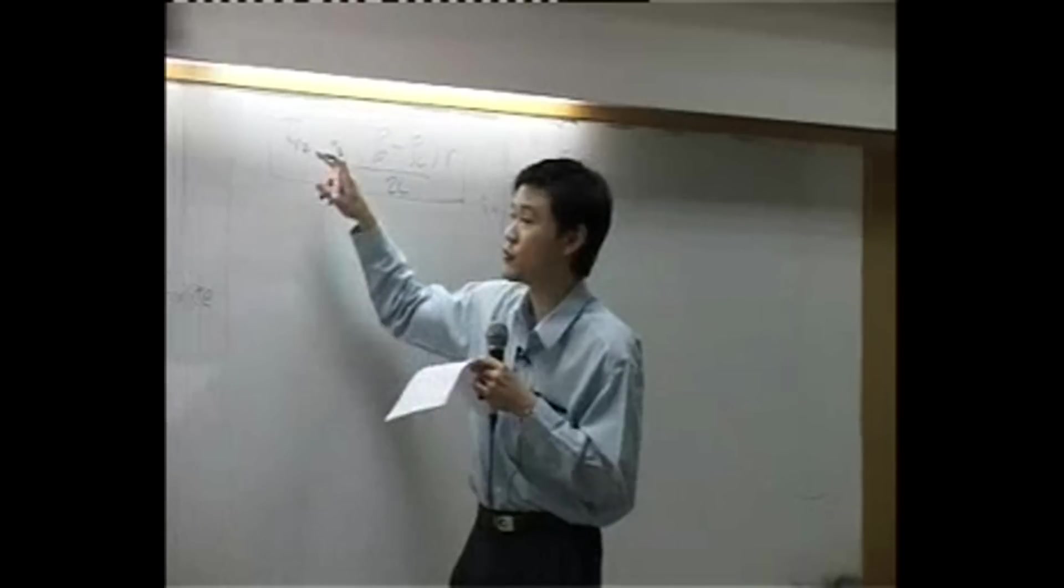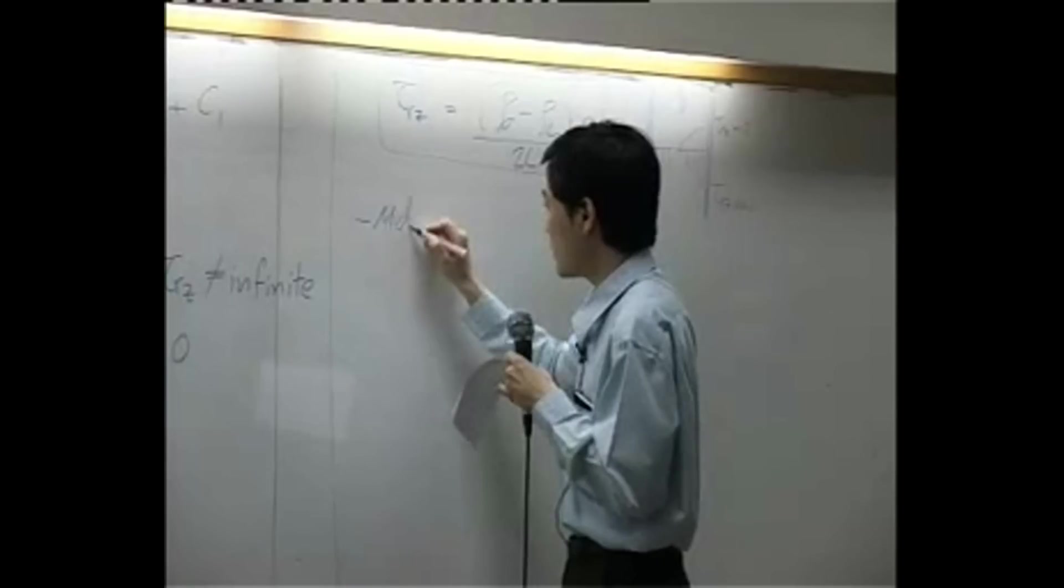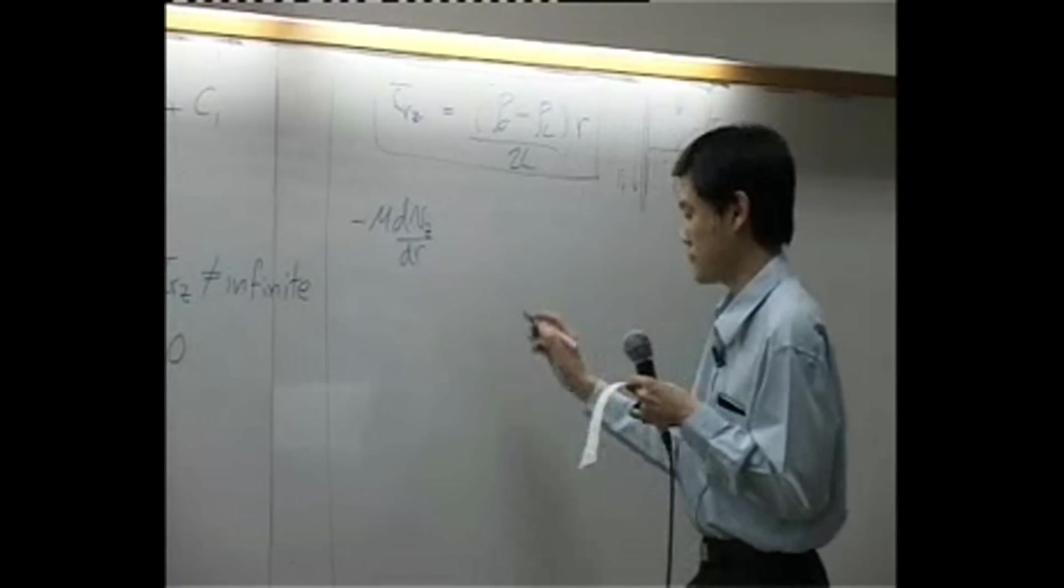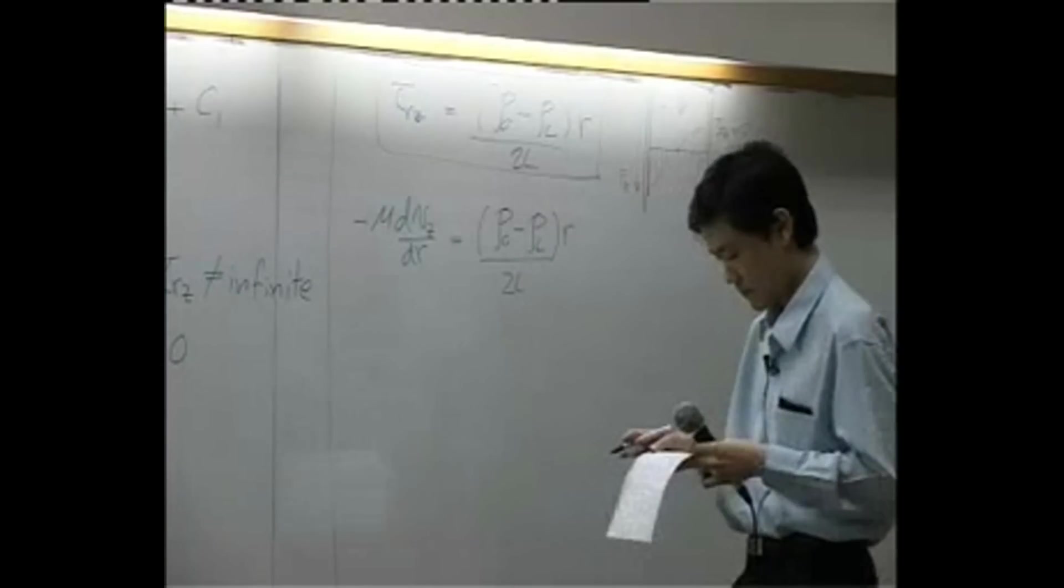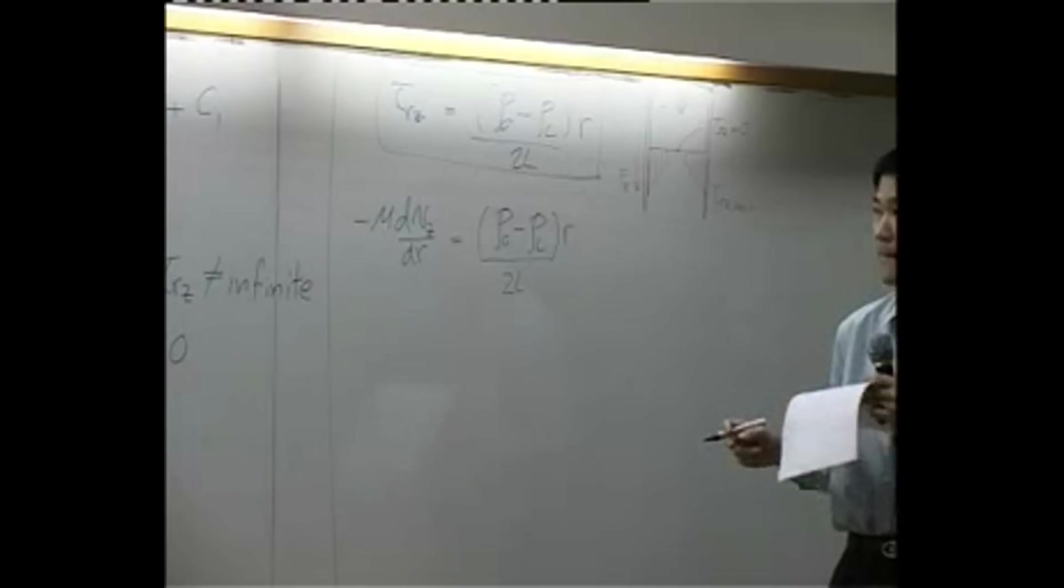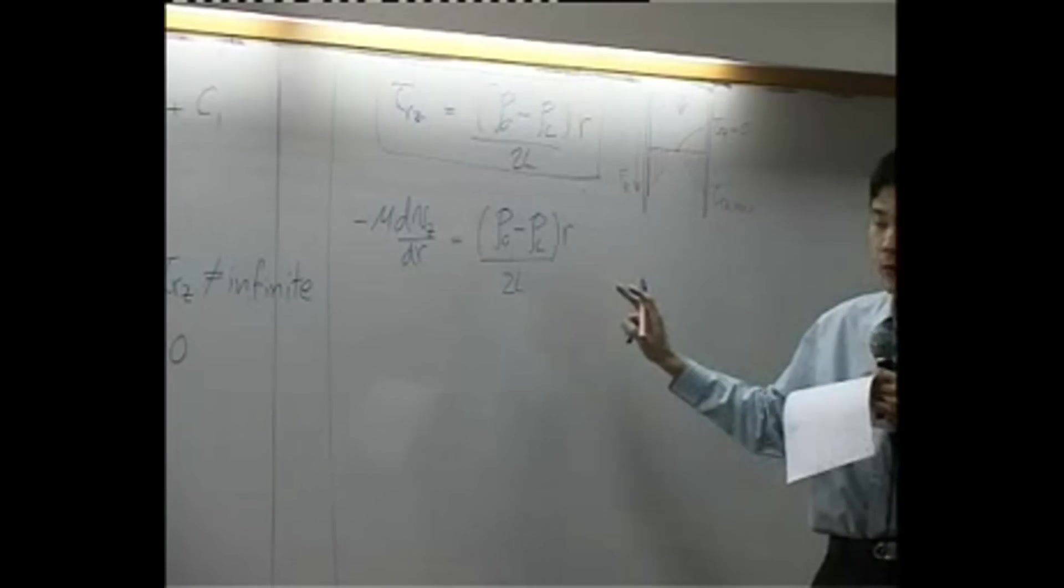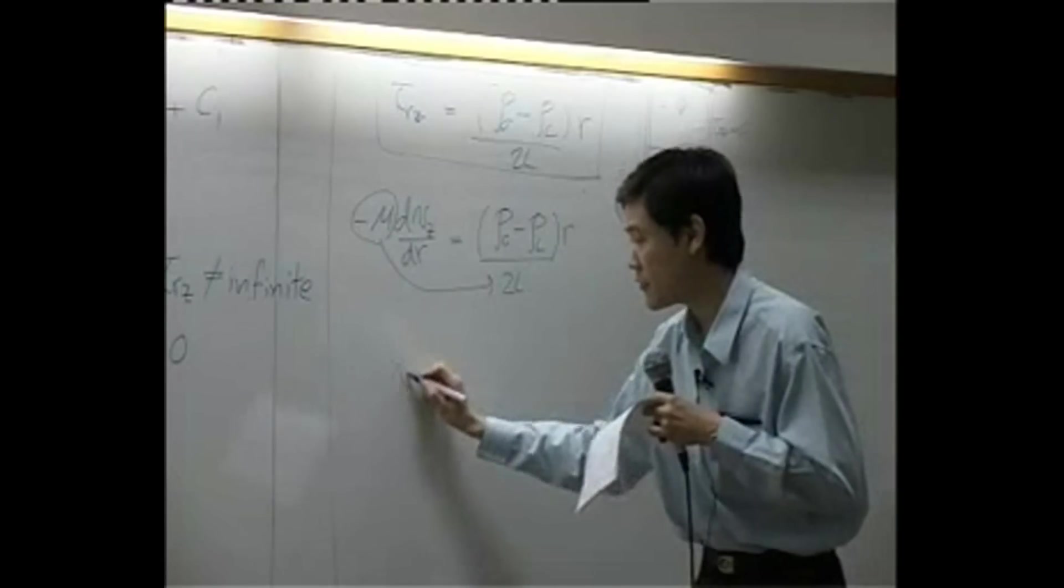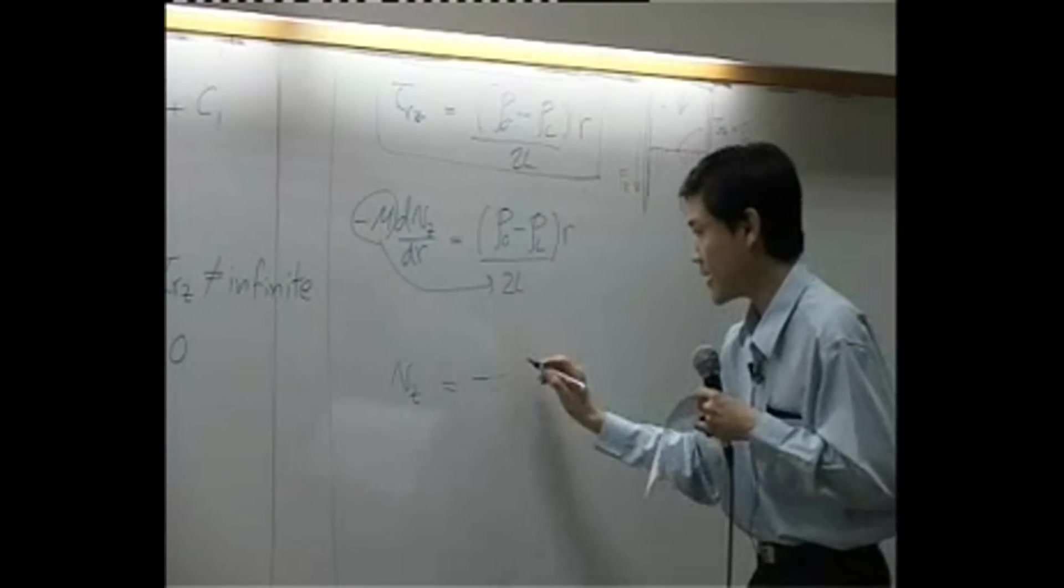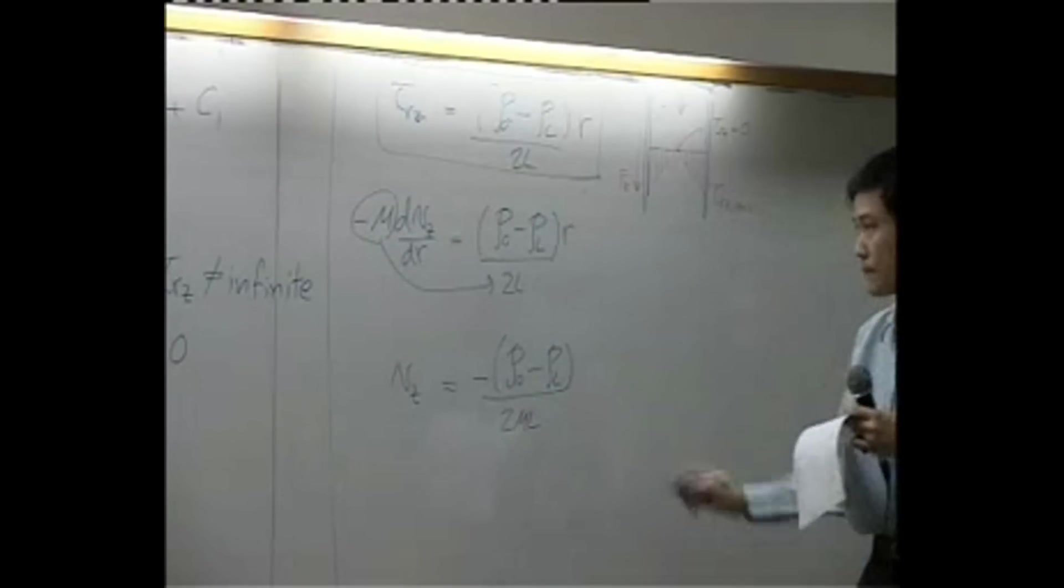Next step is to change tau into velocity using Newton's law. Tau here is minus mu dVz by dr, that's Newton's law. If I bring minus mu down to the right hand side and integrate, bring this down here and bring the r up here, you can integrate. The left hand side you get Vz. The right hand side you get negative P0 minus PL over 2 mu L, r squared over 2, plus another integration constant C2.